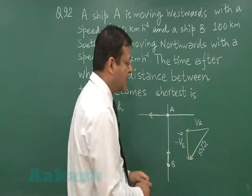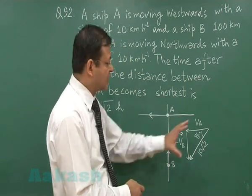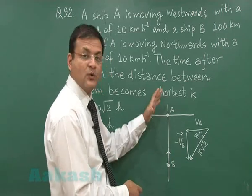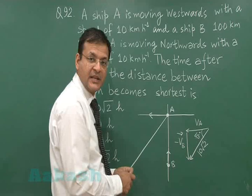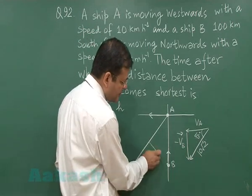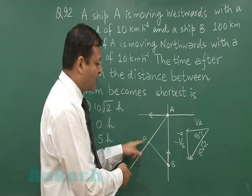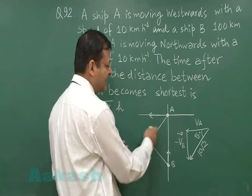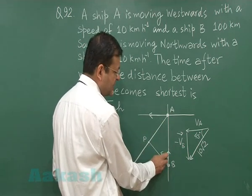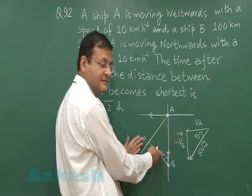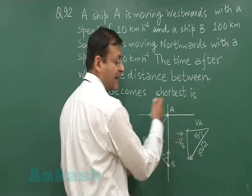Why 10√2? Because this is the Pythagoras of the two components, and this angle is 45 degrees. If you superimpose this velocity diagram here, A will appear to be moving in this particular direction and B is stationary. The shortest distance of approach will be when A has reached point P. This angle is 45 degrees here again, so you can write it as 45 degrees. The distance here is 100 sin 45, that is equal to 100/√2, and the velocity in this direction is 10√2 km/h.